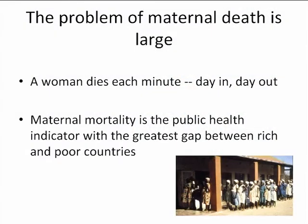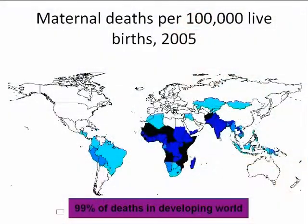The problem of maternal death is a large one. A woman dies every minute, day in and day out, and maternal mortality is a public health indicator with the biggest gap between rich and poor countries. If you look at this global map, what you see is a dark swathe of colour across the southern hemisphere — the darker the colour, the higher the maternal mortality ratio — and the problem is primarily in South Asia and Sub-Saharan Africa.